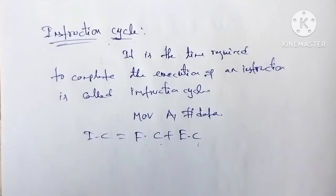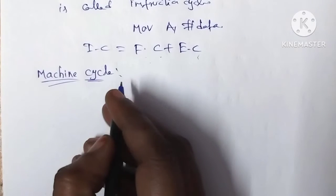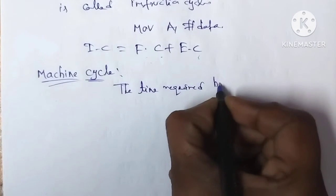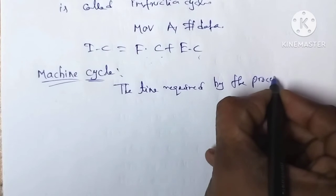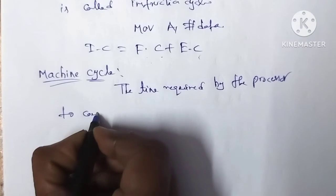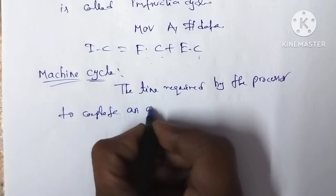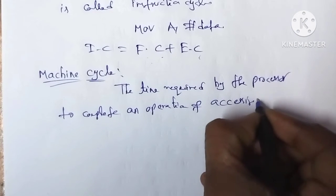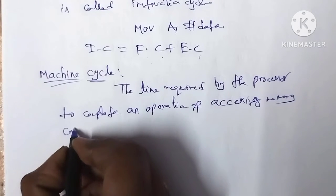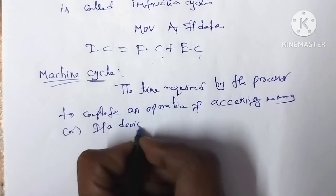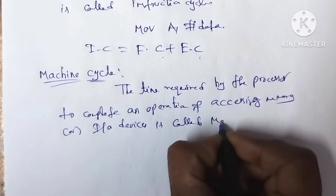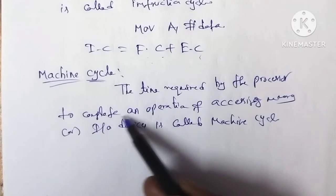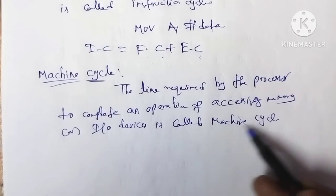Next, machine cycle: the time required by the processor to complete an operation of accessing memory or I/O devices is called the machine cycle.